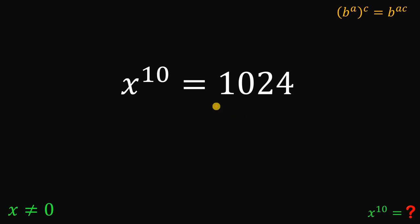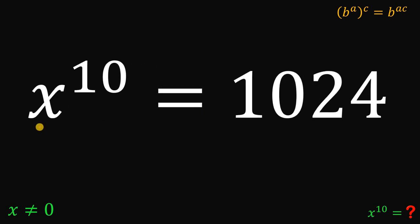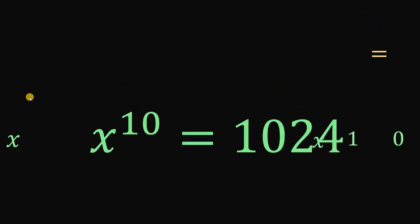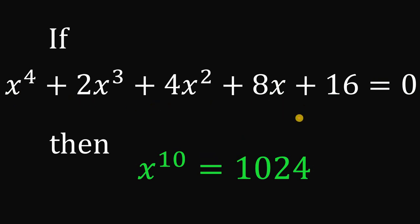Therefore, our answer to this question — what is the numerical value of x raised to the tenth power, given x to the fourth power plus 2x cubed plus 4x squared plus 8x plus 16 equals 0 — our answer is 1024. And as always, we are done.